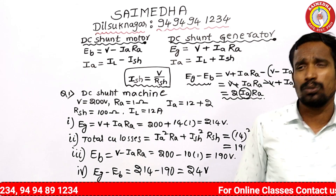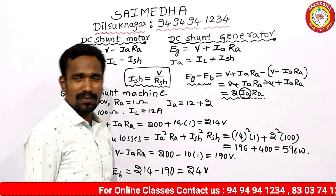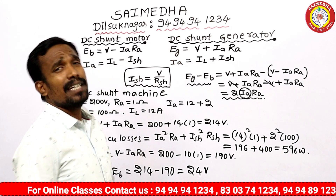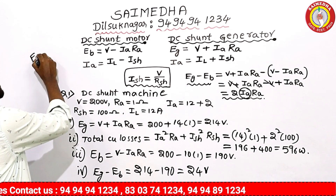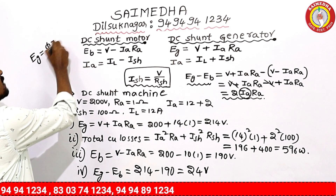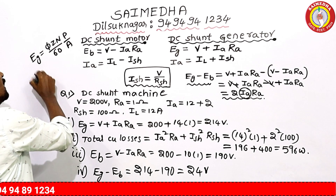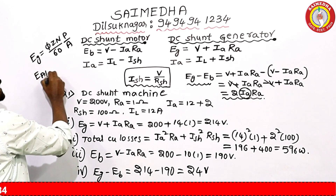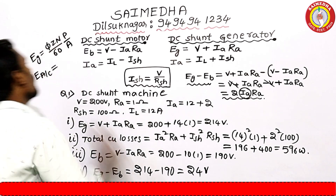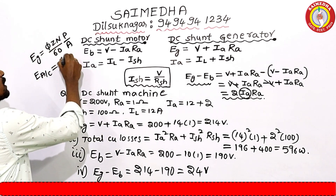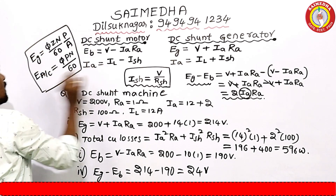So this covers a few problems on DC machines. The EMF equations are important. There is a formula: the generated EMF formula is φZN/60 × P/A. The EMF per conductor is equal to φPN/60. We will cover the EMF evaluation formula in the next video.